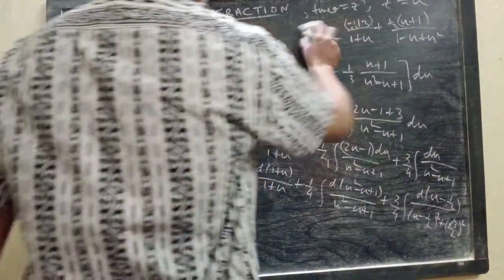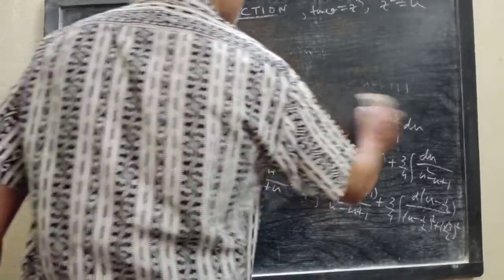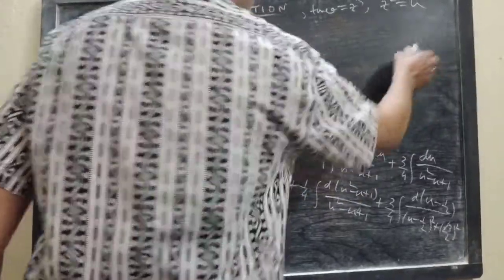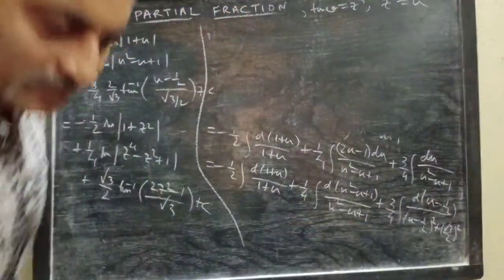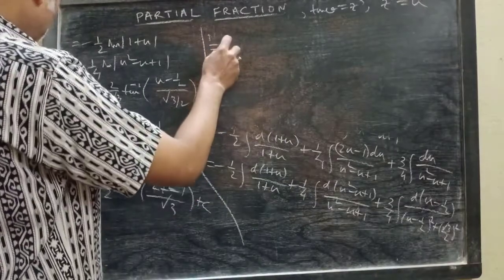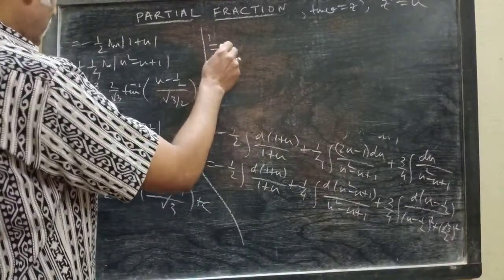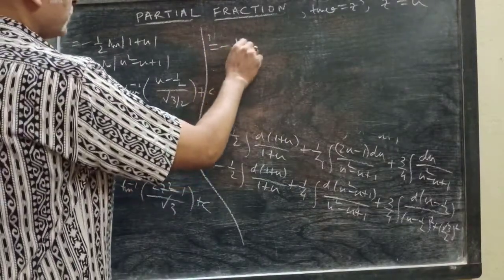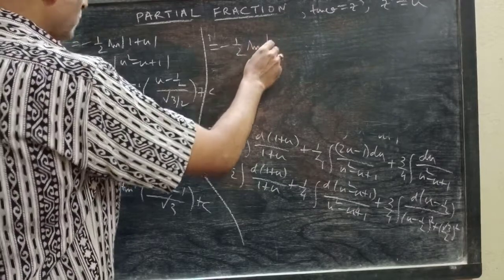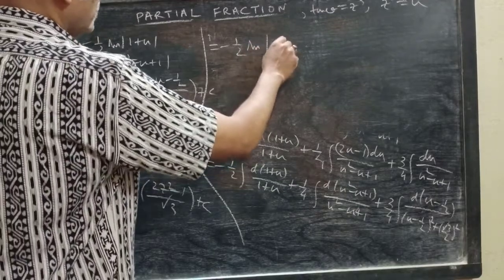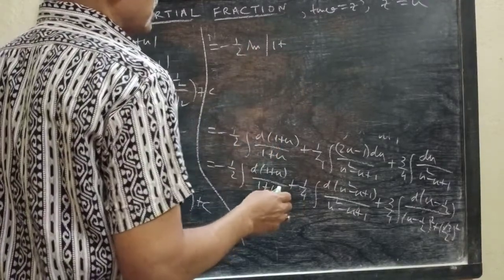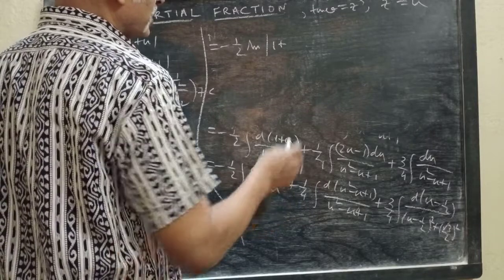Okay, in this part, this is a log problem. The final answer will be: −(1/2) ln|1 + z²|, where z is the cube root of tan θ.